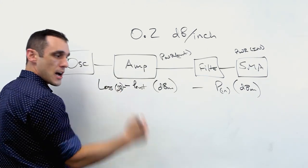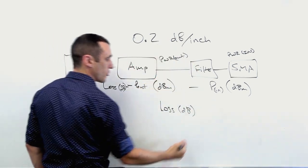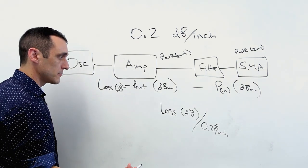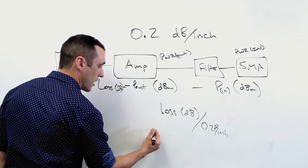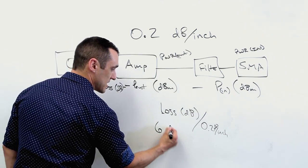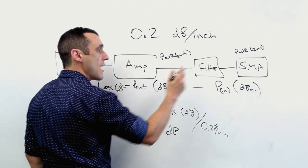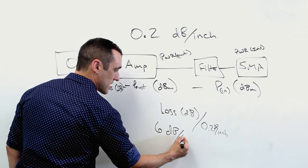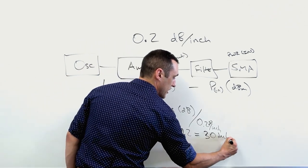Next, take your loss in dBm, divide it by in this case our 0.2 per inch, and that's going to give you the total loss that you can accept. So let's just suppose for a moment that we can accept a loss value of 6 dB. So that's our total loss that we can accept between this amplifier and this SMA connector. So 6 dB in this example divided by 0.2, that's going to give us 30 inches.